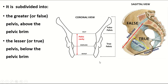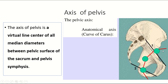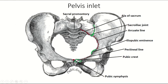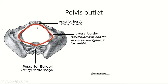The axis of the pelvis is not a straight line — it is a curved line. The plane of the bony pelvis includes the pelvic inlet and outlet. The bony parts forming the pelvic inlet are: the sacral promontory, the ala of the sacrum, the sacroiliac joint, the arcuate line, the iliopubic eminence, the pectineal line, the pubic crest, and the superior surface of the pubic symphysis. The pelvic outlet boundaries are: anteriorly the lower border of the pubic symphysis, anterolaterally the ischiopubic ramus, laterally the ischial tuberosity, posteriorly the tip of the coccyx, and posterolaterally the sacrotuberous ligament.